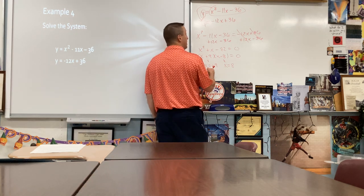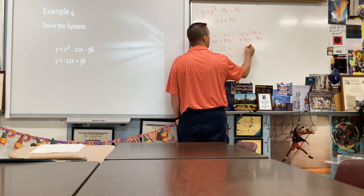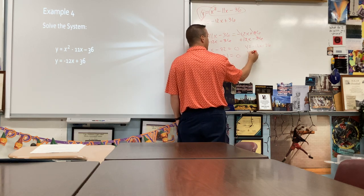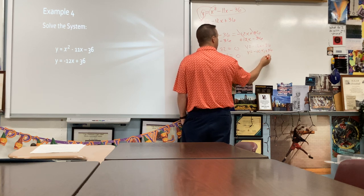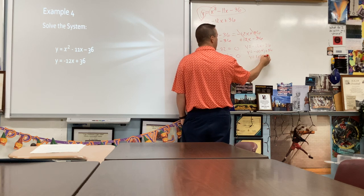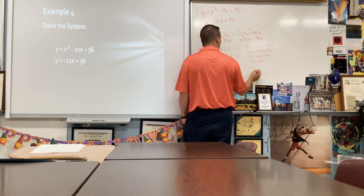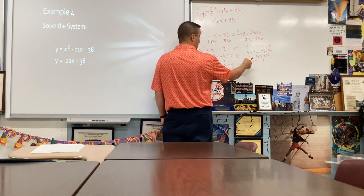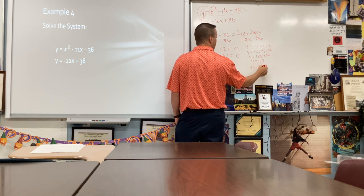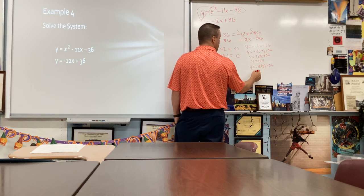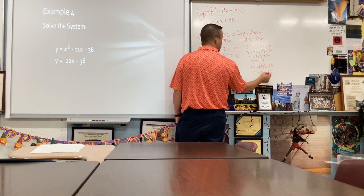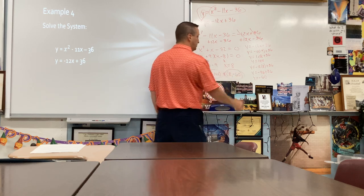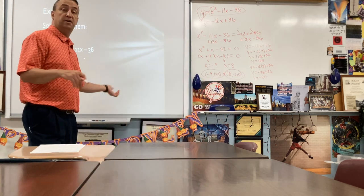We know we're not done — we have to plug back in. Using y equals negative 12x plus 36: for x equals negative 9, y equals negative 12 times negative 9 plus 36, which is 108 plus 36, so y equals 144. First ordered pair: (−9, 144). For x equals 8: y equals negative 12 times 8 plus 36, which is negative 96 plus 36, so y equals negative 60. Second ordered pair: (8, −60).